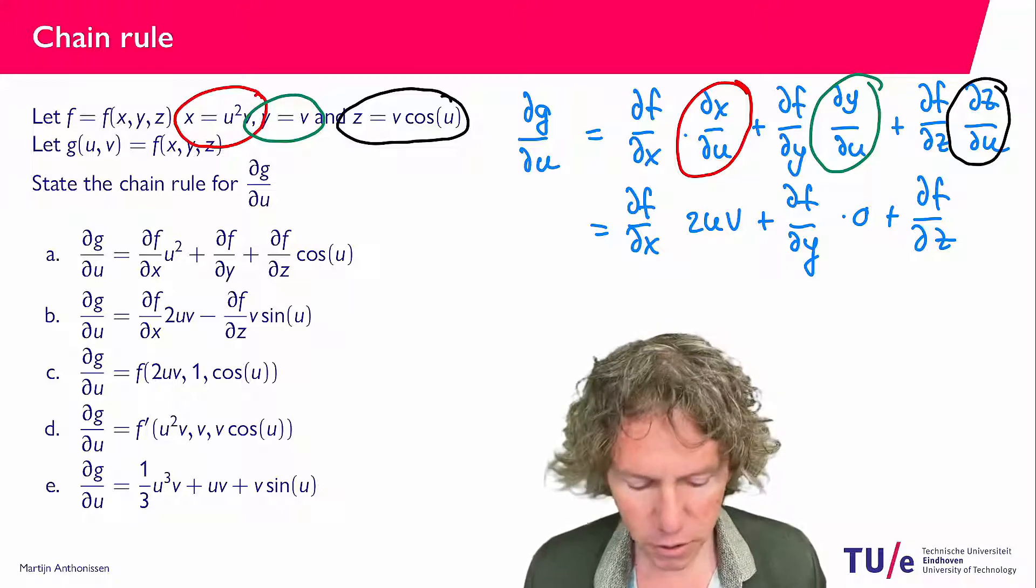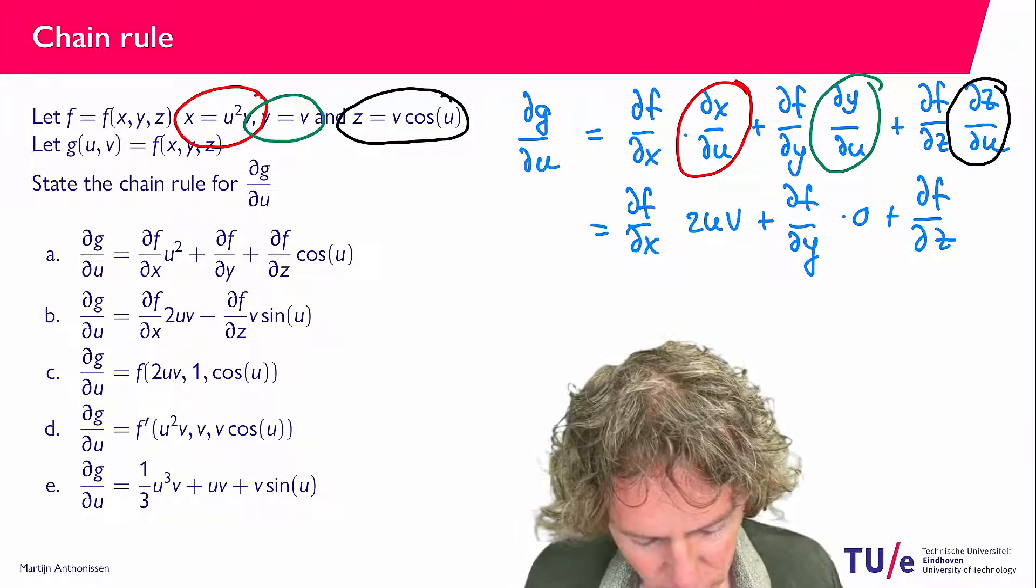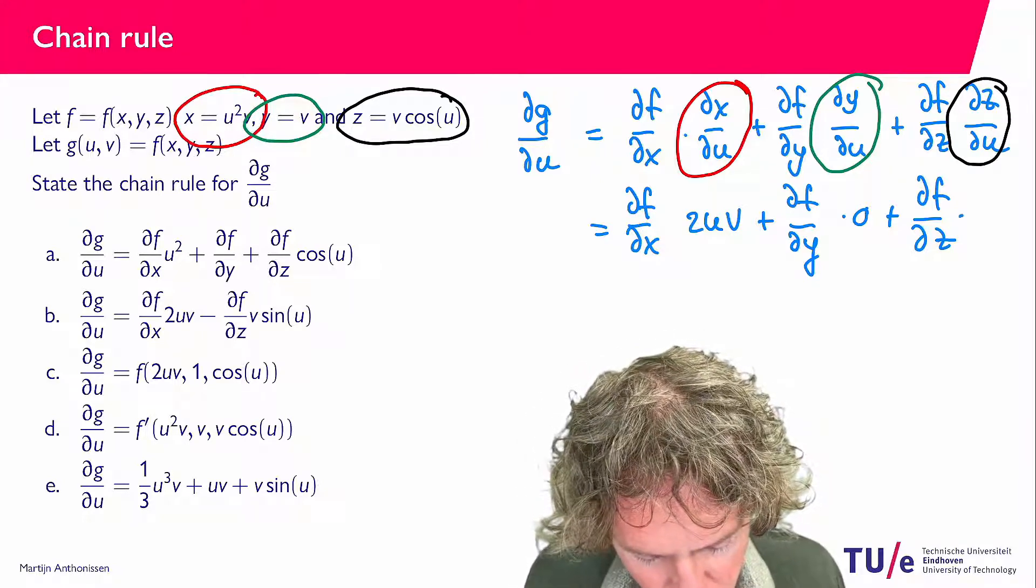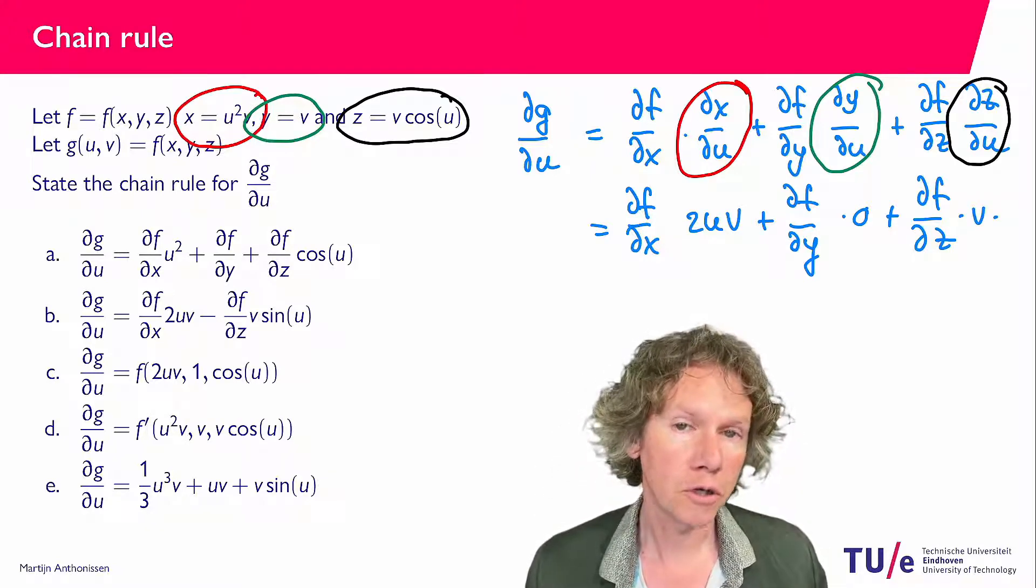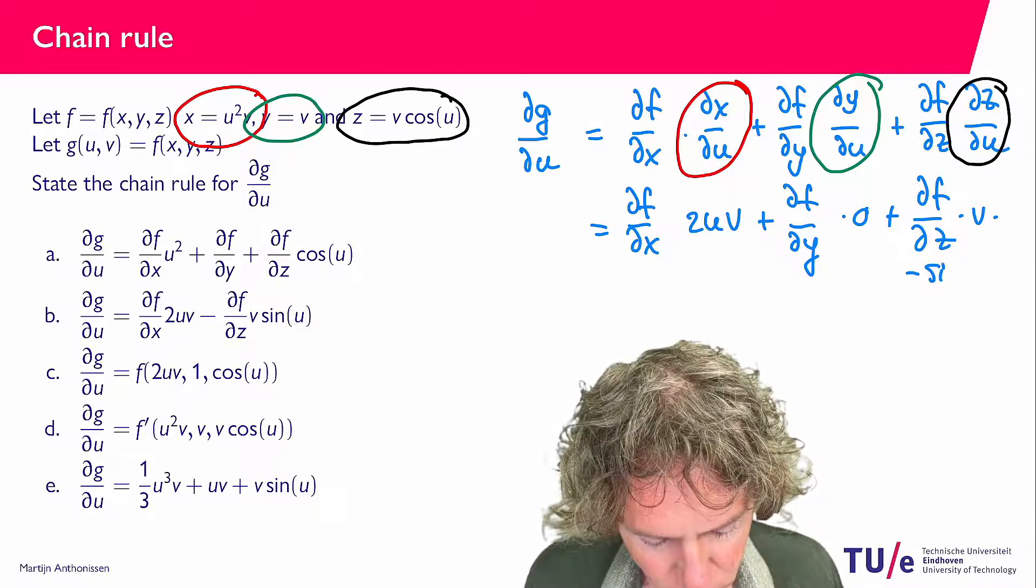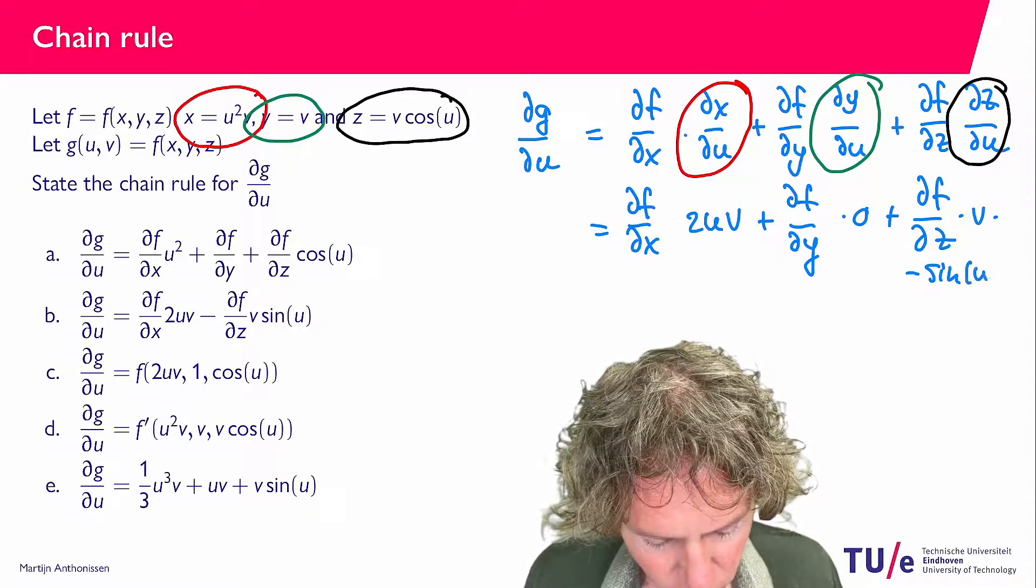v is a constant, so we get times v... cosine u differentiation gives minus sine of u.